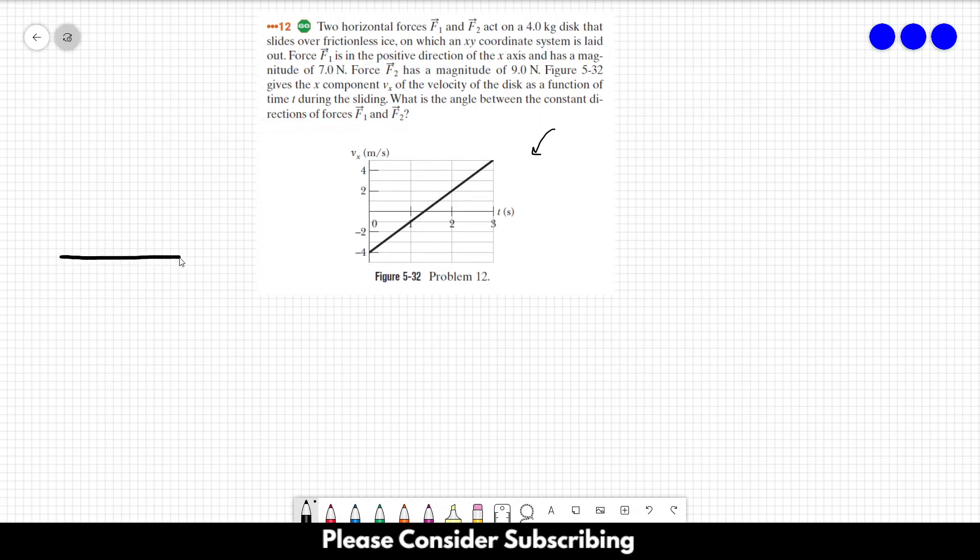Let's draw our coordinate system. This should be x and this should be y. We know that F1 points in the positive x direction, so this is F1. And let's say that F2 is something like this with an angle theta and we don't know theta. You could draw F2 to any direction that you wanted. That's just a generic angle. And we have to find this angle theta.